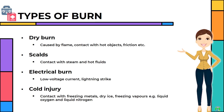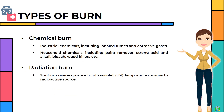The following are the types of burns. Dry burn: caused by flame, contact with hot objects, friction, etc. Scalds: contact with steam and hot fluids. Electrical burn: low voltage current or lightning strike. Cold injury: contact with freezing metals, dry ice, or freezing vapors such as liquid oxygen and liquid nitrogen. Chemical burn: industrial chemicals including inhaled fumes and corrosive gases; household chemicals including paint remover, strong acid and alkali, bleach, weed killers, etc. Radiation burn: sunburn, overexposure to ultraviolet (UV) lamp, and exposure to radioactive sources.